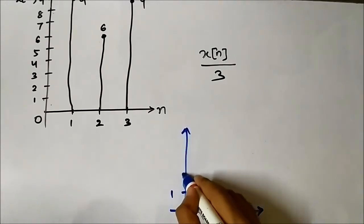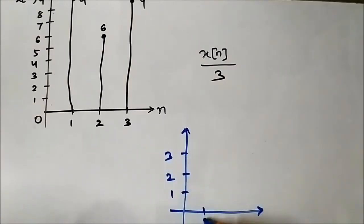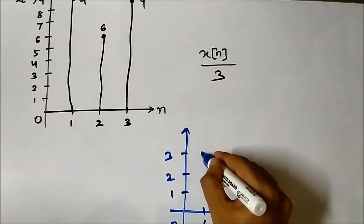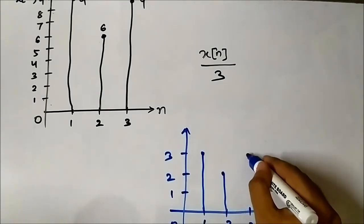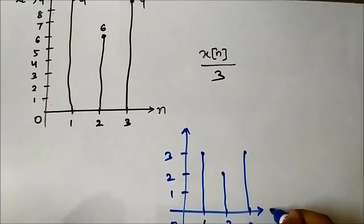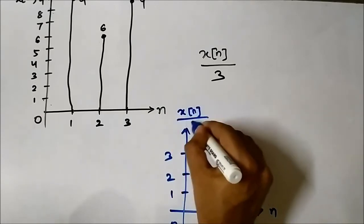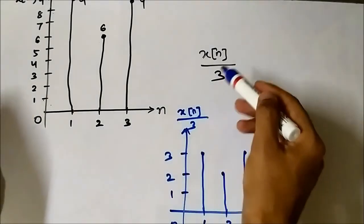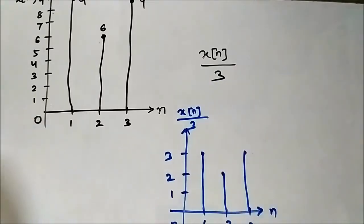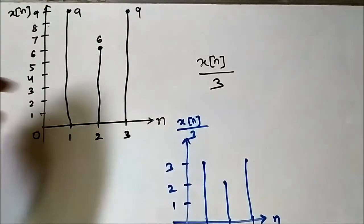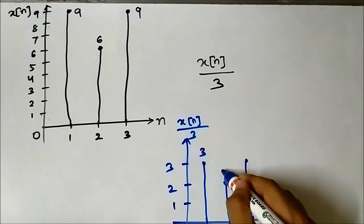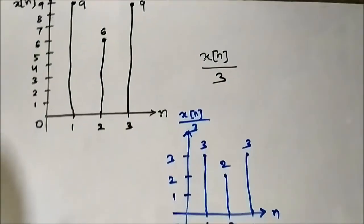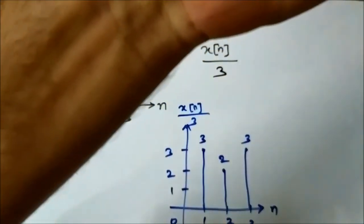Drawing the result: at n=1 it is 3, at n=2 it is 2, and at n=3 it is again 3. So it is scaled down — attenuation occurred because the scaling factor is in fractional form. The original was 9, 6, 9 at n=1, 2, 3. We multiplied 1/3 with each amplitude: 9/3=3, 6/3=2, and 9/3=3. This is the amplitude scaled signal.